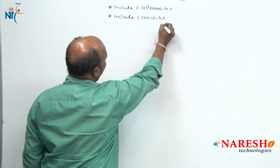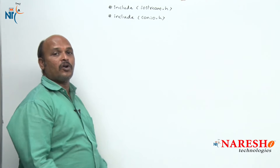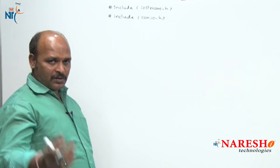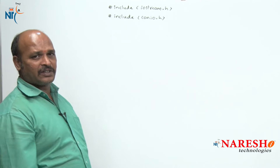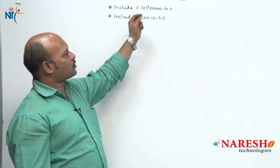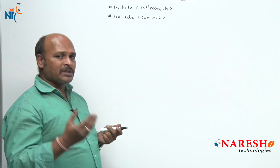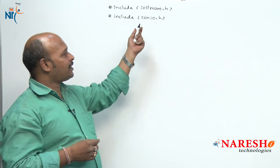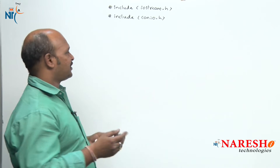Next, hash include conio.h. We are going to use the clrscr and getch functions in our program. So iostream.h is for cout and cin, and conio.h is for clrscr and getch.